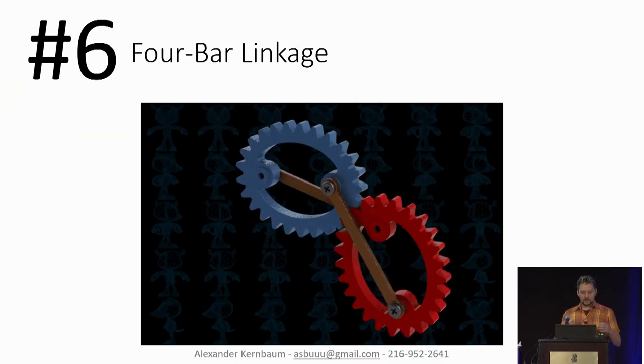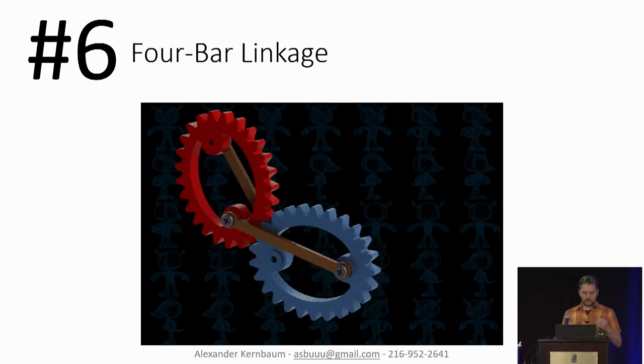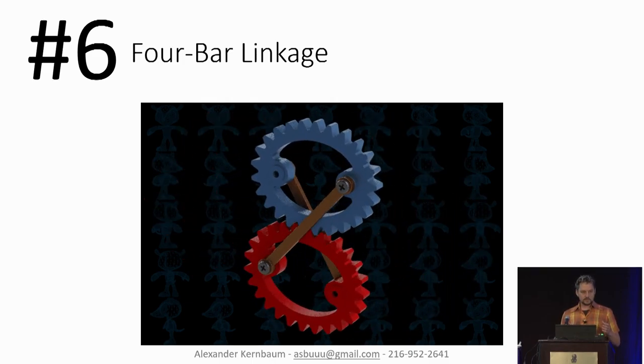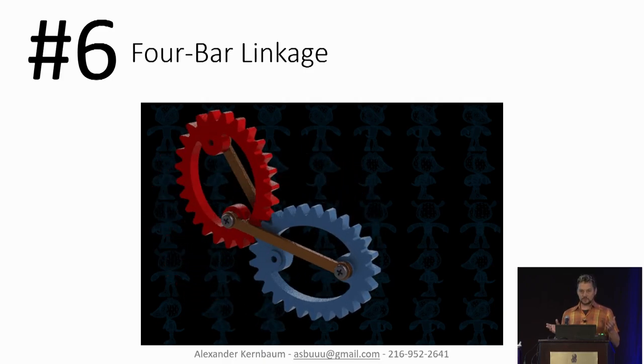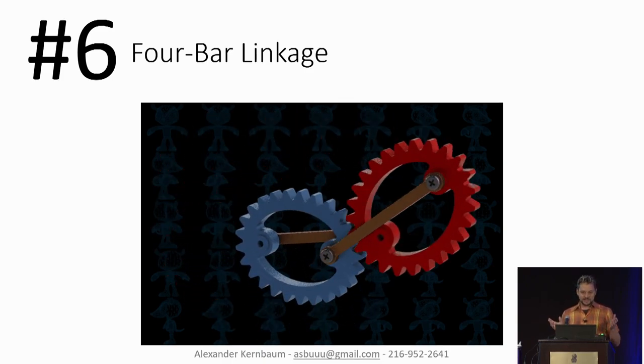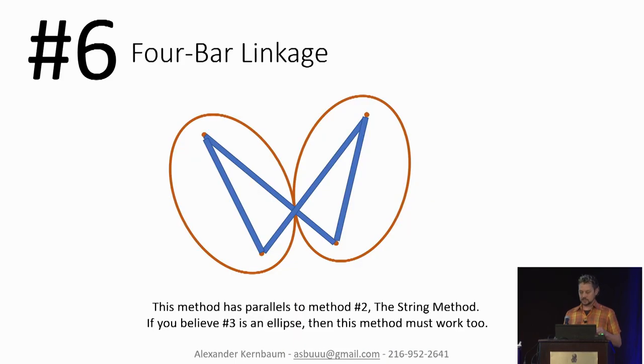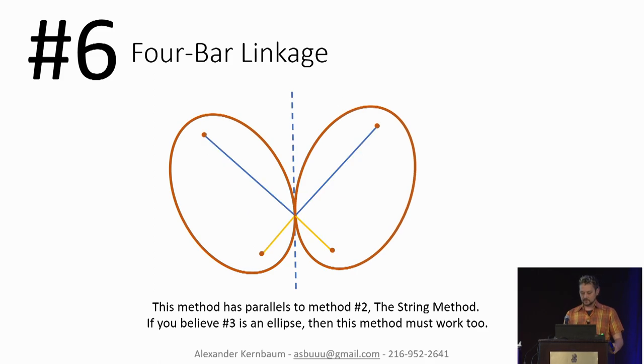Four-bar linkages. So as a mechanical engineer, this is a little inside secret. If a mechanical engineer says something is a four-bar linkage, what they mean is it's a one degree of freedom system. That's pretty much it. In this case, the one degree of freedom system does have four linkages, and you can kind of see them right there. And why can you make an ellipse this way? The ellipse is the cross point of the two of the linkages right there that defines the ellipse.